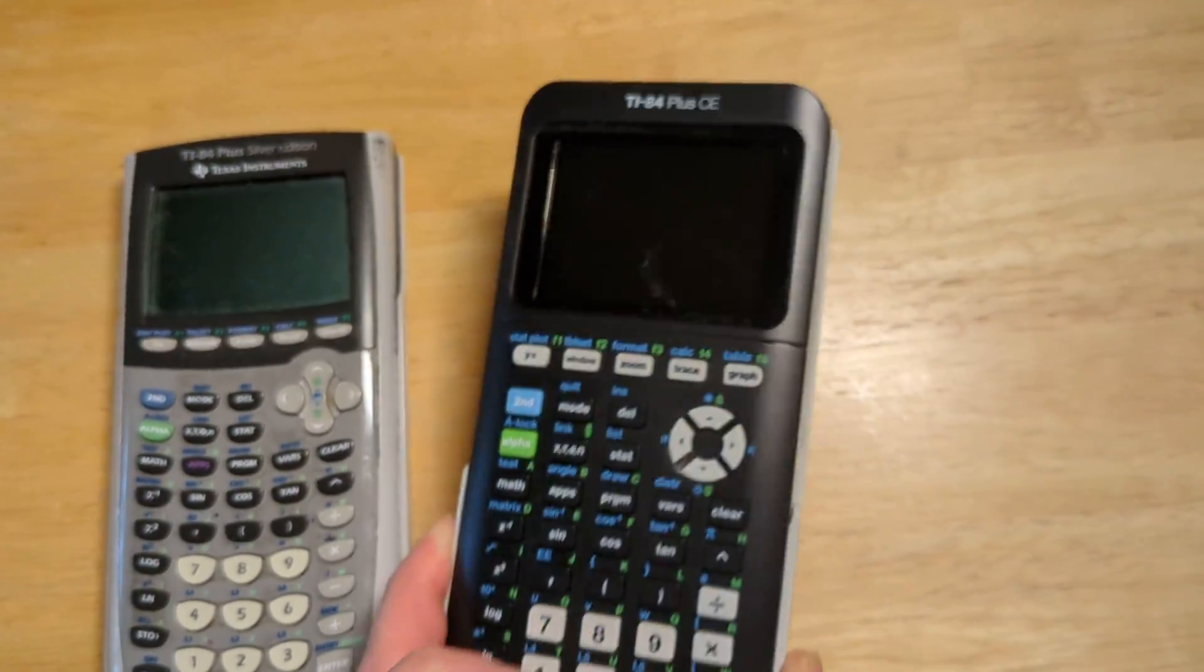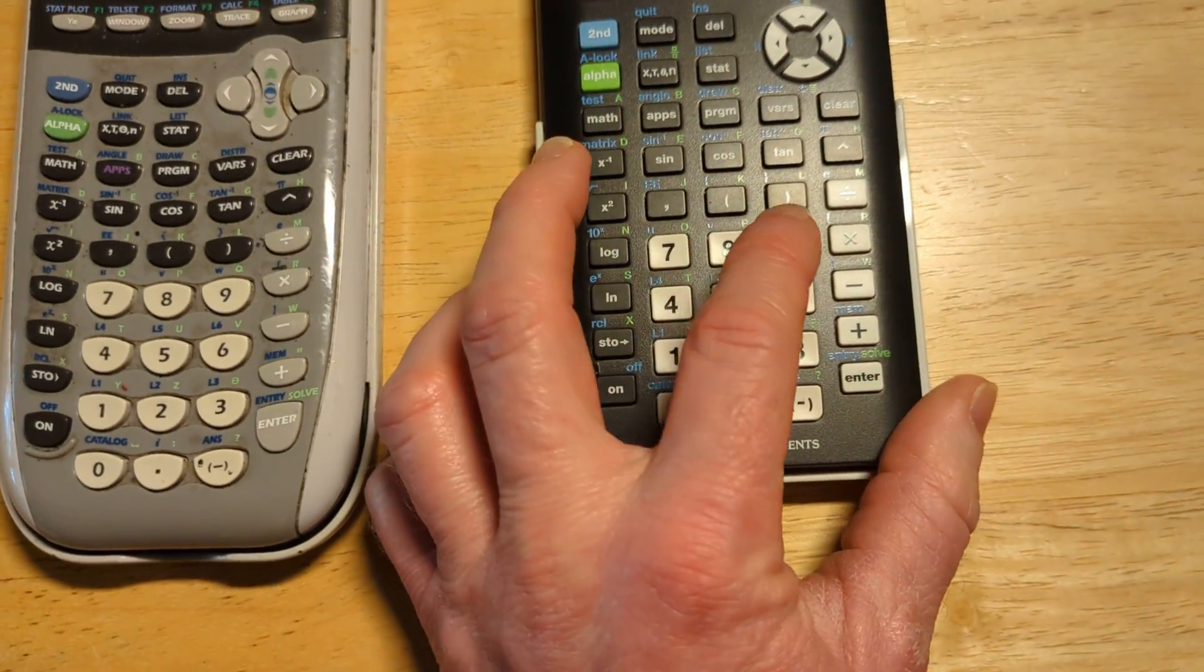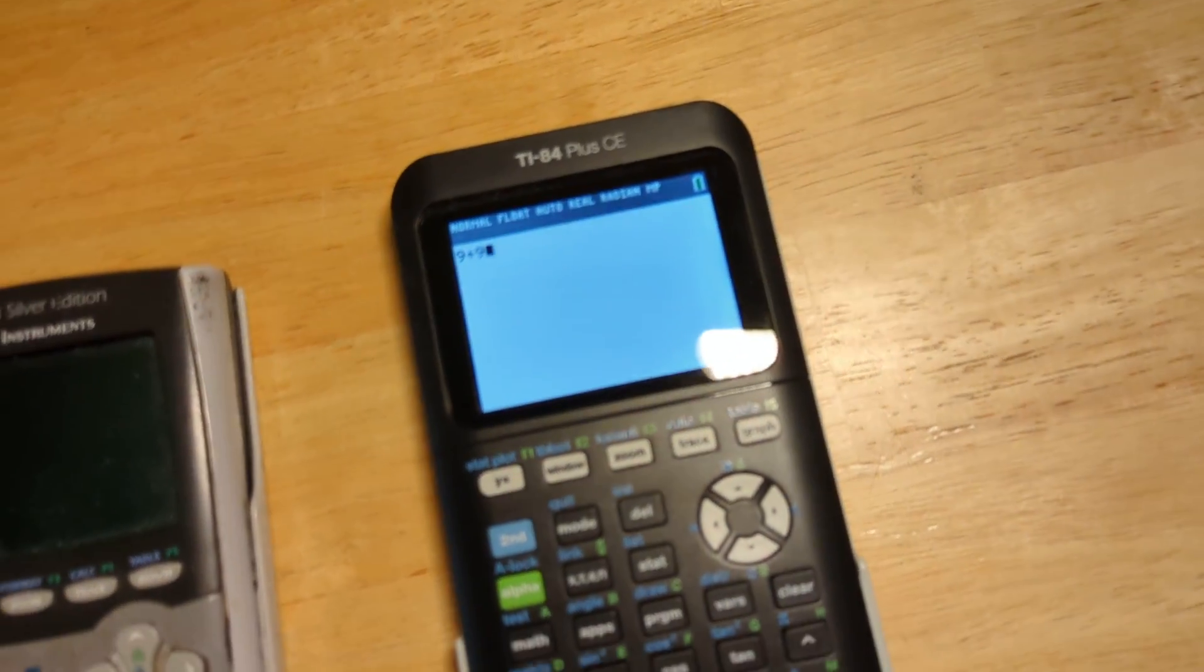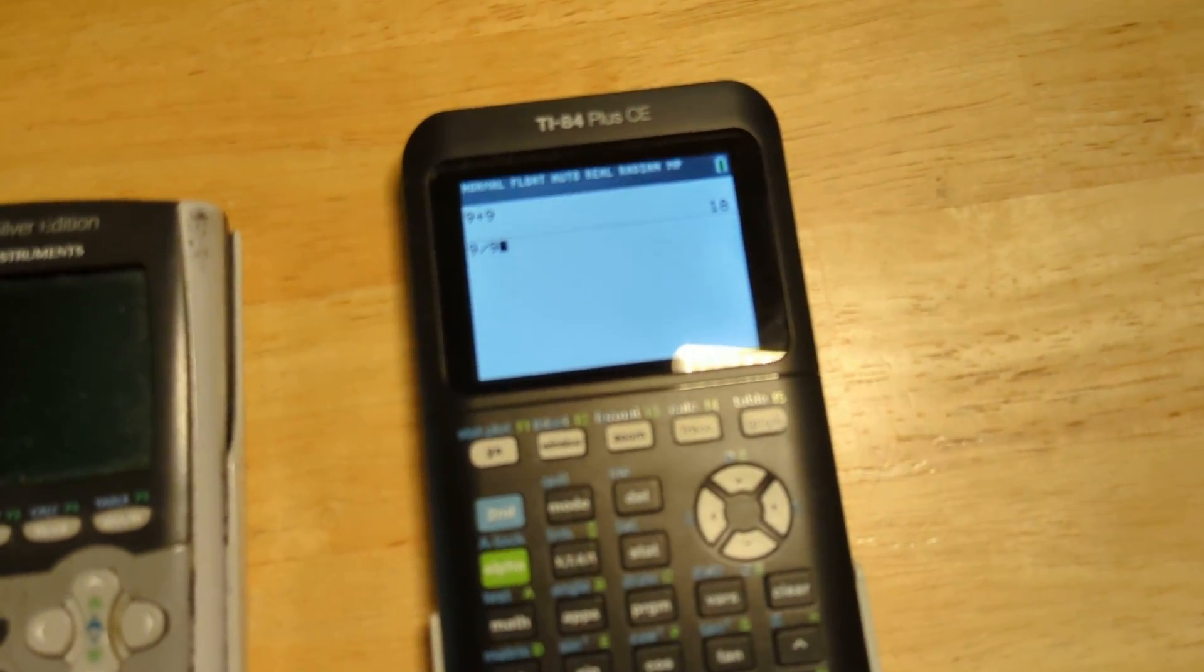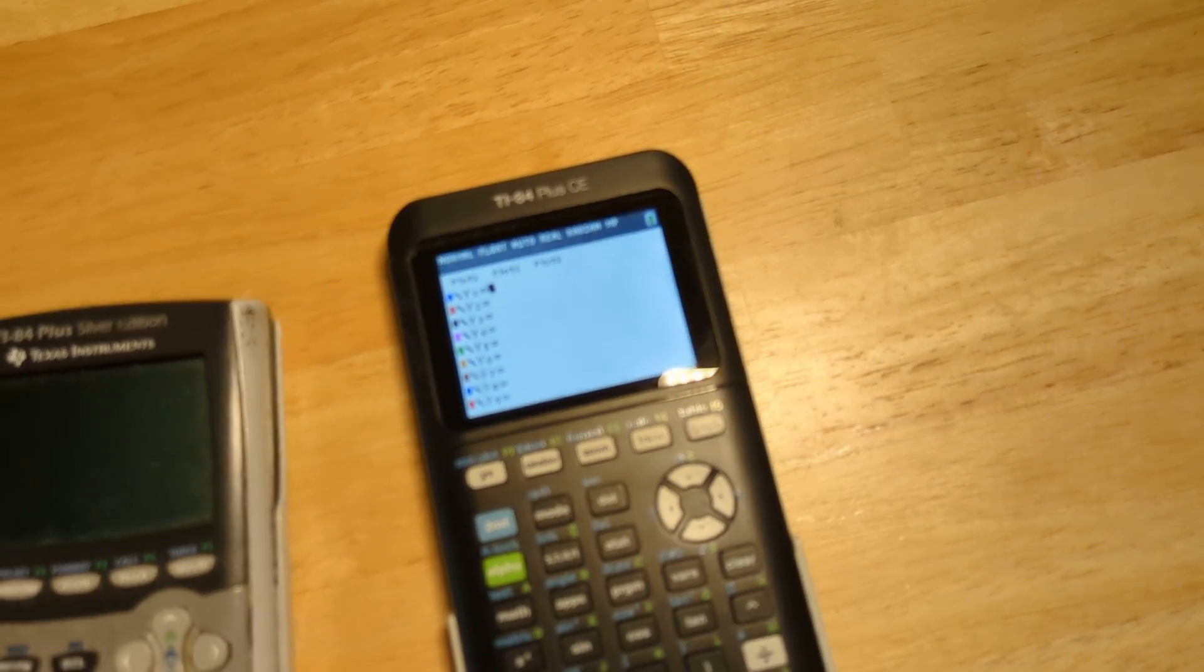What a cool little calculator, right? Let's turn it on one more time. Yeah, I really like this one. It's just really nice. Let's do 9 plus 9. Yeah, it does fractions, too. 9 over 9 is 1. And yeah, it does statistics.